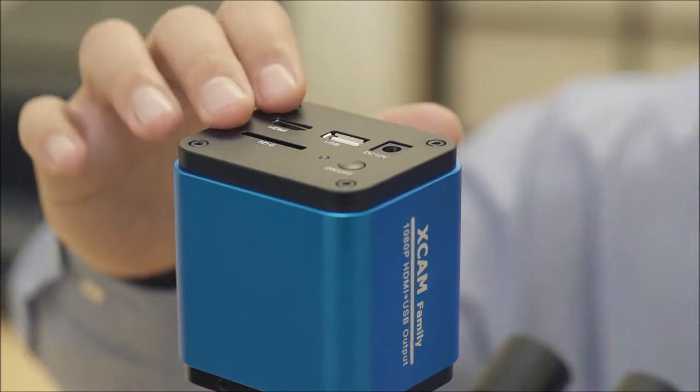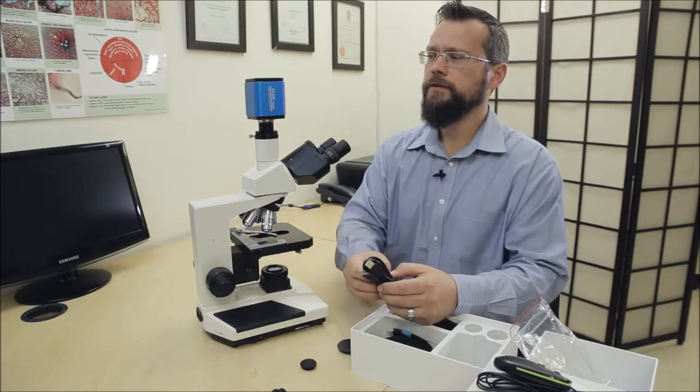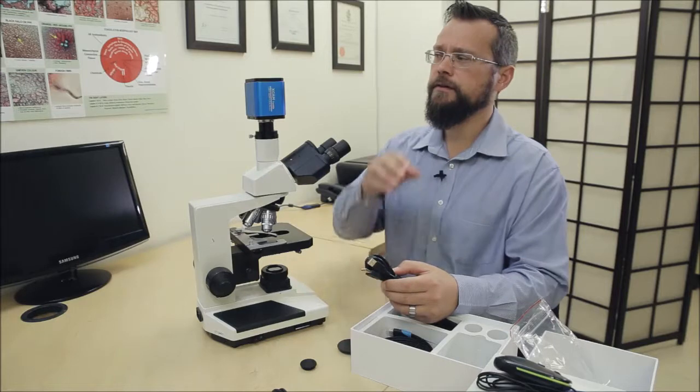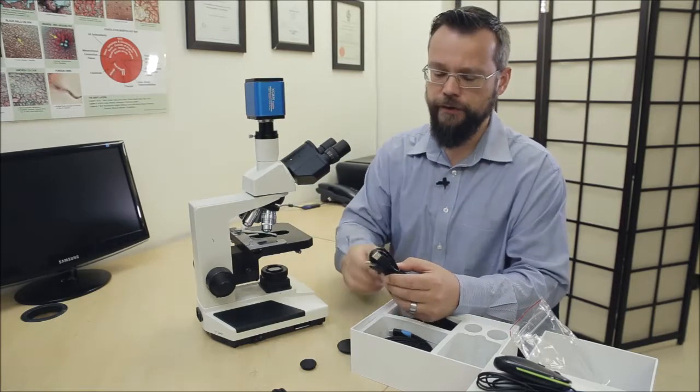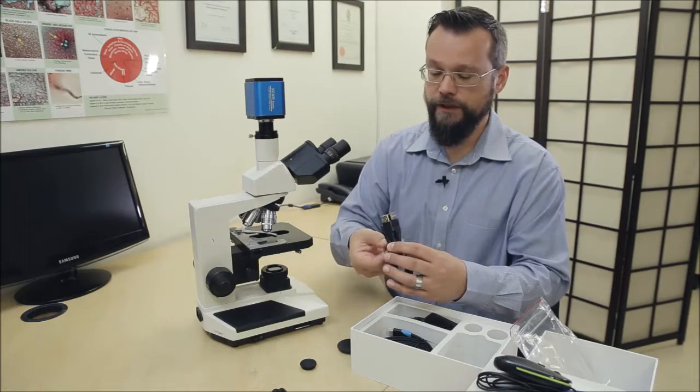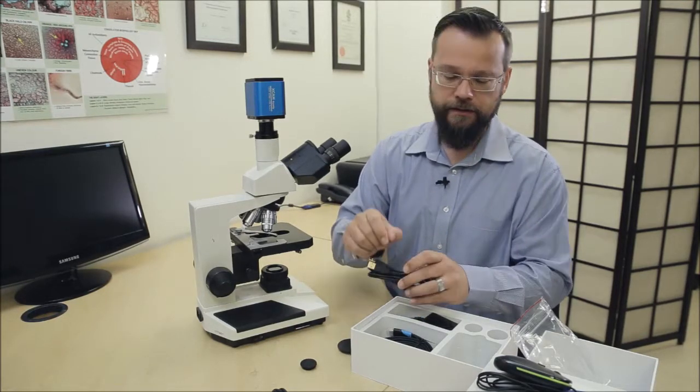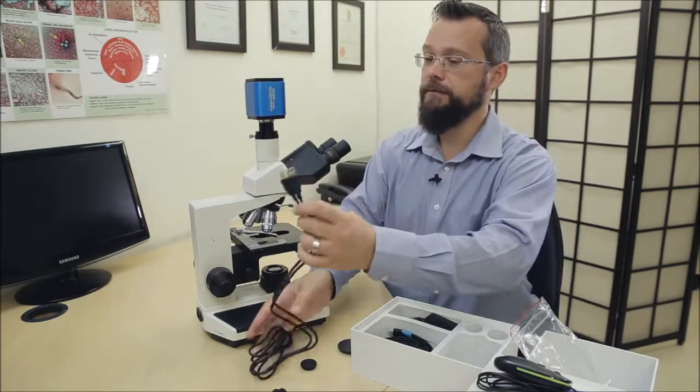So at the top of the camera you'll notice a few ports and a button there, so we're just going to connect everything there and we do supply instructions on how to connect the camera. There are a few options with the HDMI camera. You are able to connect it directly via HDMI cable to a screen without connecting it to a computer, but we generally recommend that you do connect it to a computer as well as an HDMI screen. The computer of course allows you to actually take images and save images of what you've seen in the blood.